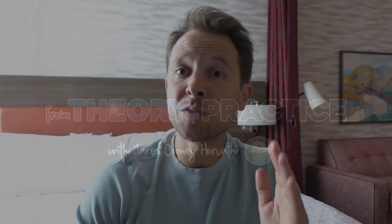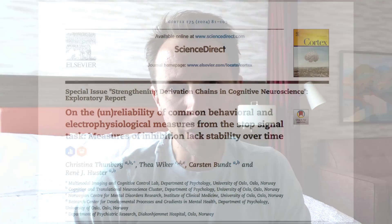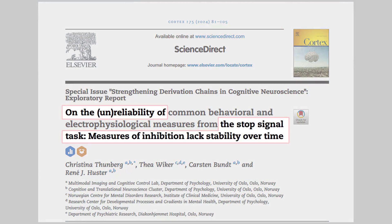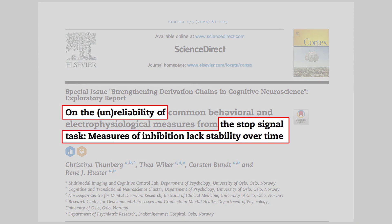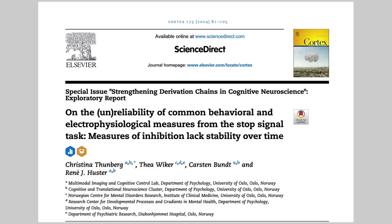Hello everybody, and welcome to this week's From Theory to Practice, where I take a look at the research so you don't have to. The article I've selected this week is called "On the Unreliability of the Stop Signal Task: Measures of Inhibition Lack Stability Over Time" by Thunberg and colleagues. I selected this paper because it's raised a lot of questions in my mind that I'm still battling with, so I thought I'd share those with you.